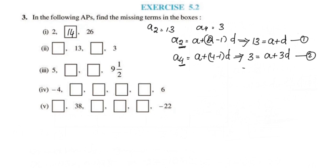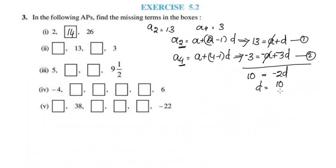Now we subtract equation 2 from equation 1: 13 minus 3 equals 10. And d minus 3d equals negative 2d. So 10 = negative 2d.